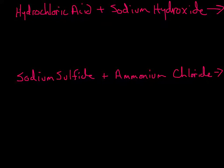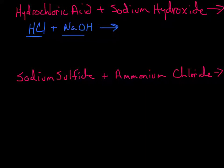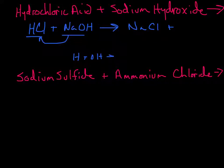Let's look at hydrochloric acid: HCl plus sodium hydroxide, NaOH. Hydrogen is +1, chloride is −1 — that's okay. Sodium is +1, hydroxide is −1 — that's okay. So these react: sodium combines with chloride to give sodium chloride, and hydrogen combines with OH. Here's a little secret — H⁺ plus OH⁻ always gives you water.